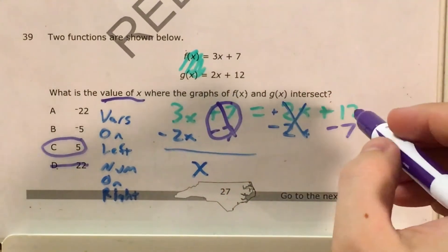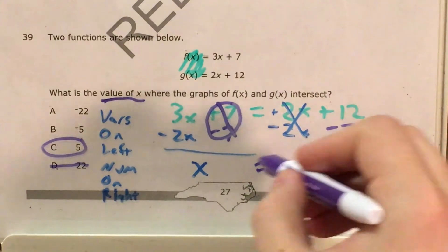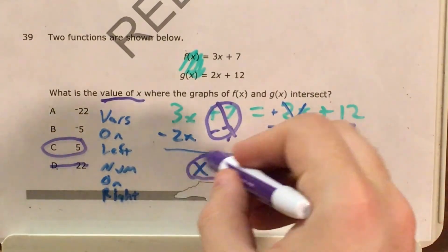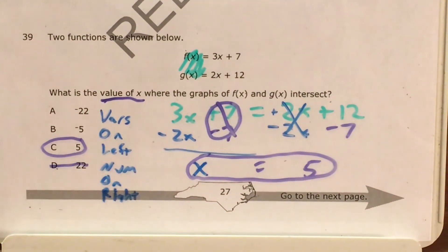Plus 7 and minus 7 cancel. 12 minus 7 is 5. So I end up with 1x equals 5. This is the same number I got from doing this in my calculator.